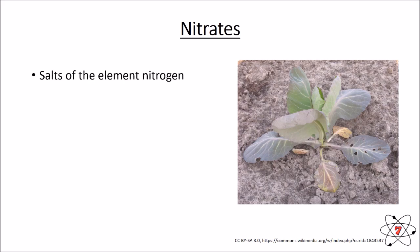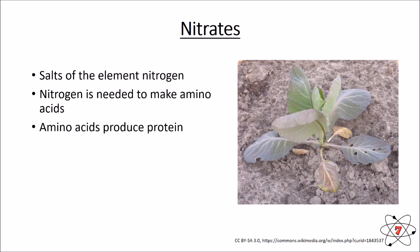So I'm going to take you through the main nutrients that a plant needs. First, we have nitrates. Nitrates contain, unsurprisingly, nitrogen as the main element. Nitrogen is needed to make amino acids — it is absolutely essential that you have nitrogen in an amino acid, and all amino acids must contain it.